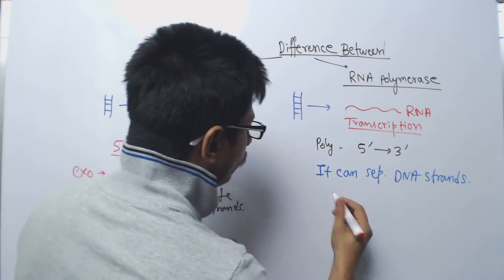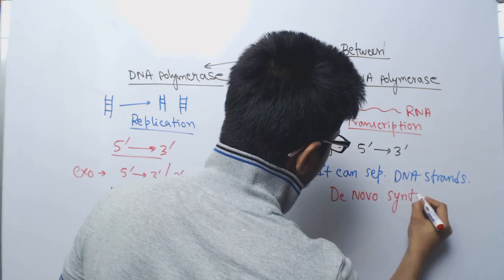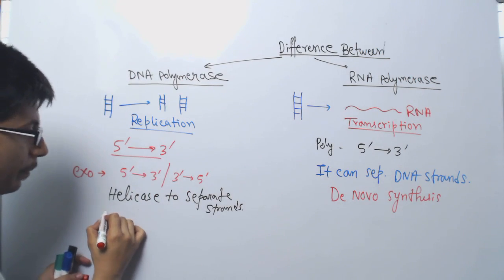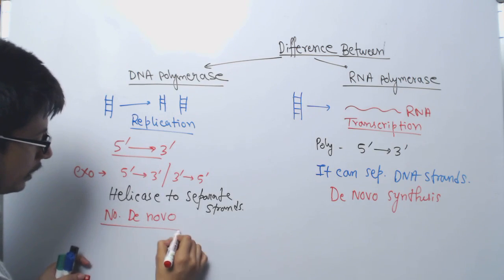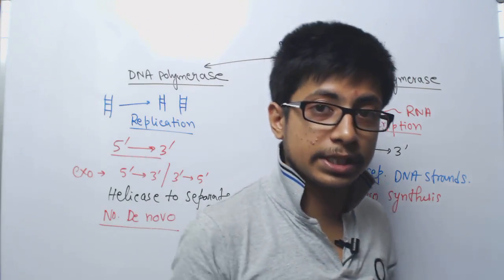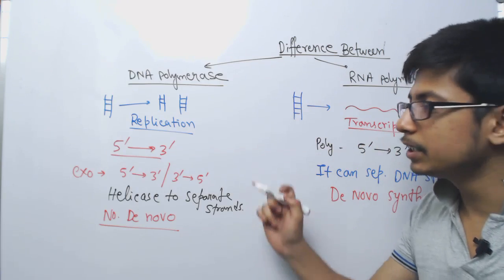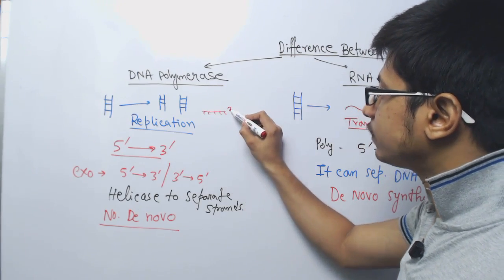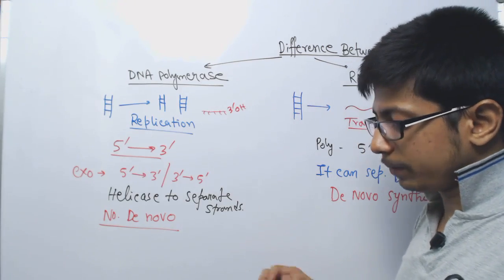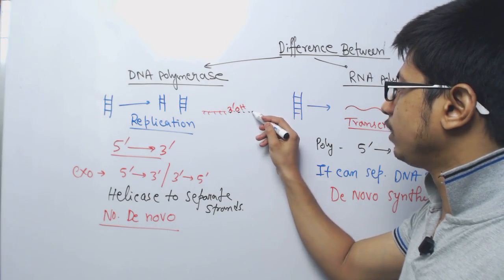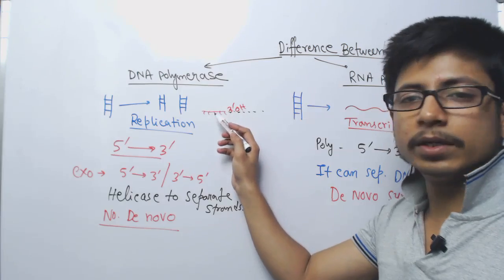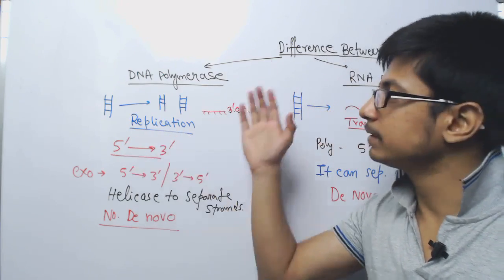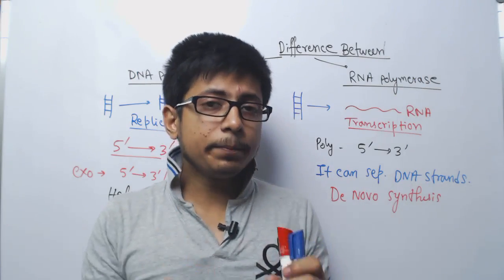RNA polymerase can perform de novo synthesis of RNA, but DNA polymerase cannot initiate de novo synthesis. So even in the DNA replication process, at the start point we require an RNA polymerase to attach a short nucleotide sequence known as the RNA primer. That primer has a free three prime hydroxyl group which DNA polymerase can then extend. At the end of replication, the RNA primer must be removed and the gap filled with deoxyribonucleotide sequences — an extra step that must be done.